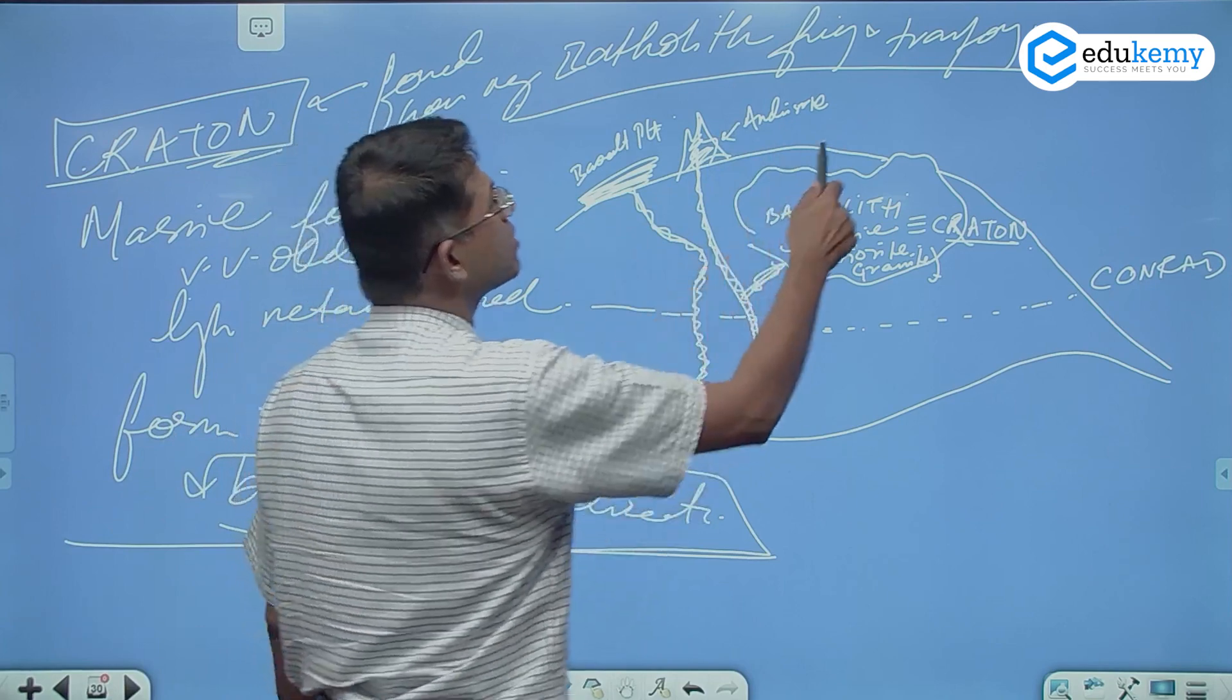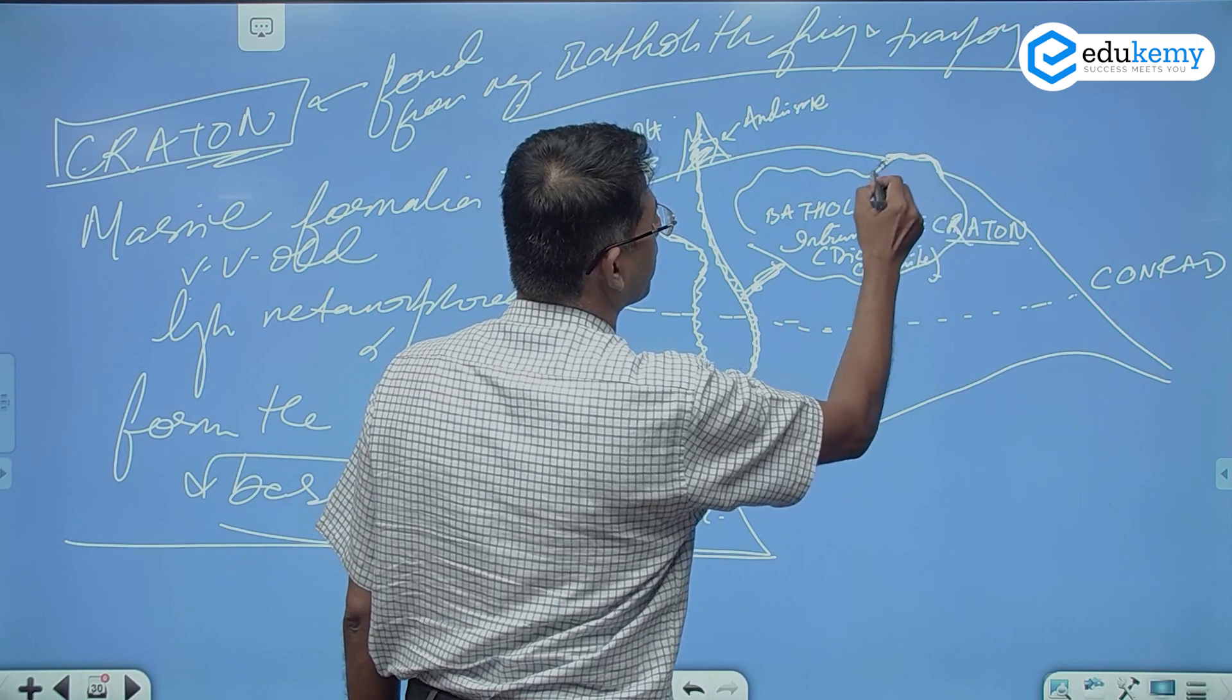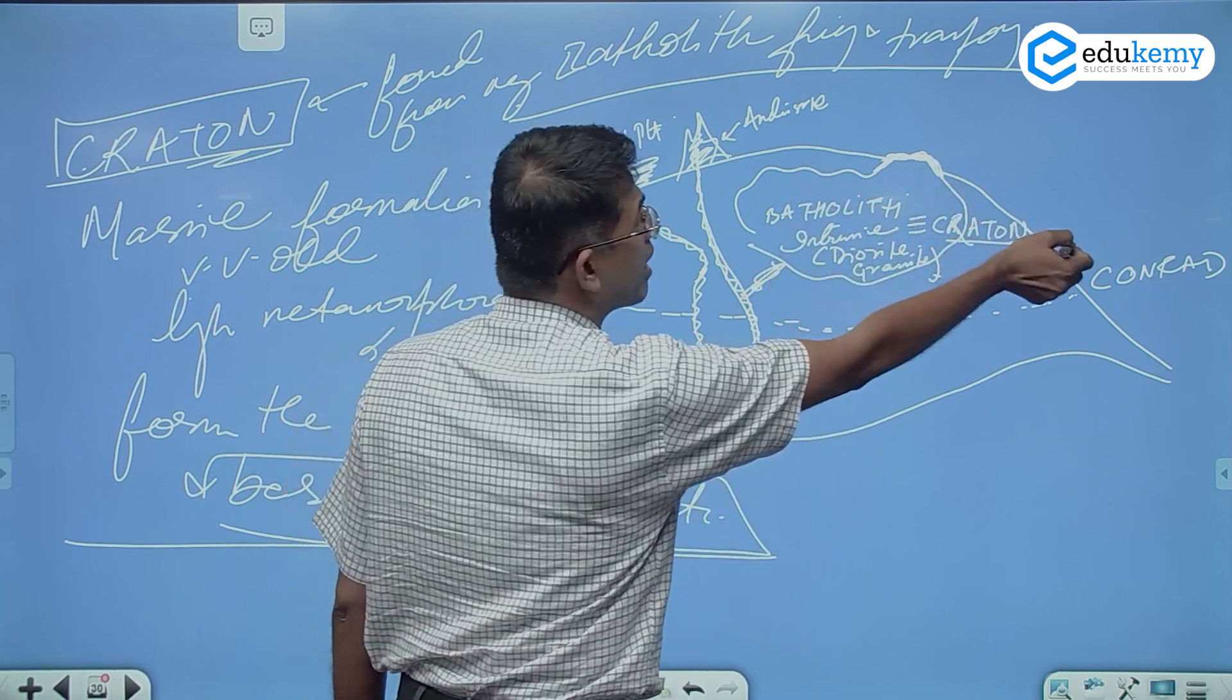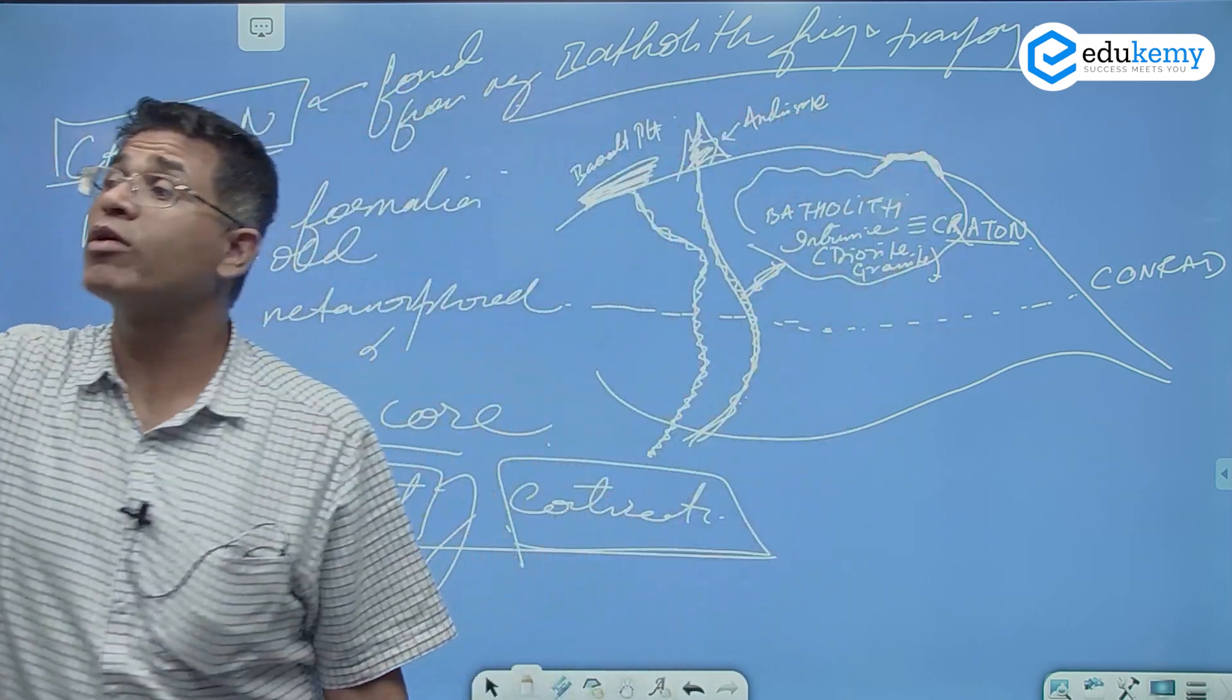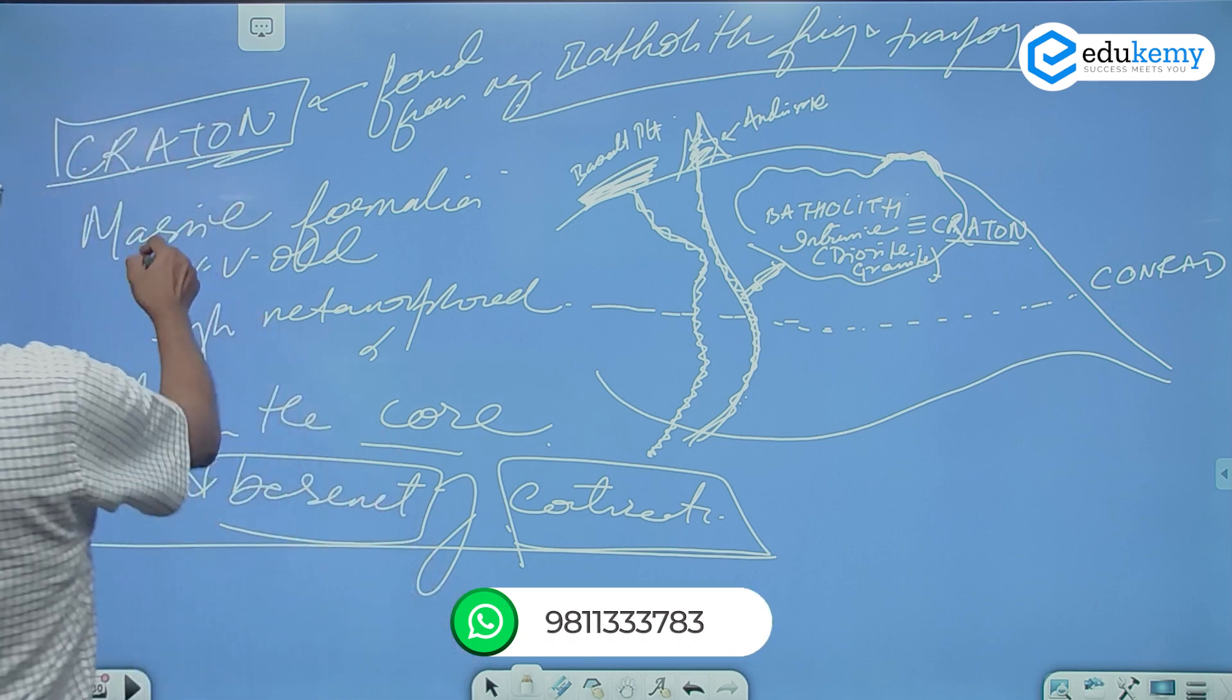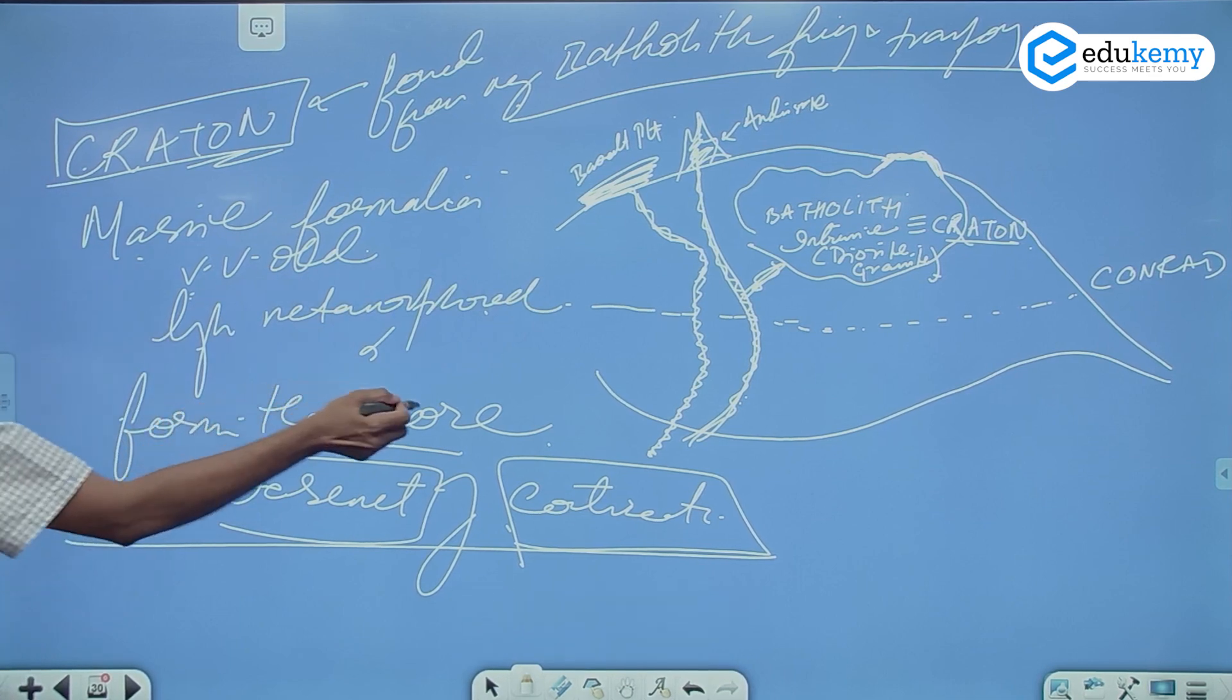Sometimes the rocks get eroded and the Craton gets exposed. Here it is very, very hard rock. Other parts can get eroded, but this will stand out like an elevation. It will look like an escarpment. So the Cratons are massive formations, very, very old, highly metamorphosed and they form the core and the basement of the continents.